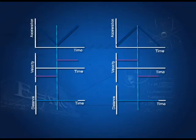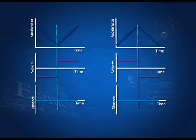Further examples: distance increasing, velocity constant and positive, acceleration is constant and positive — appearing only at the point where velocity changes from negative to positive. In the opposite case: distance increasing then decreasing, velocity constant then negative, and acceleration appears only when velocity changes from positive to negative.